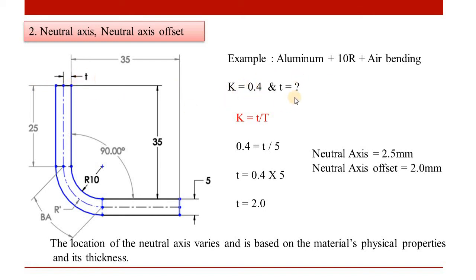The neutral axis distance is not measured from the outside face — in this case, the neutral axis is at 2.5 mm for a 5 mm material. The neutral axis offset is defined as the location of the neutral axis, which varies and is based on the material's physical properties and its thickness.